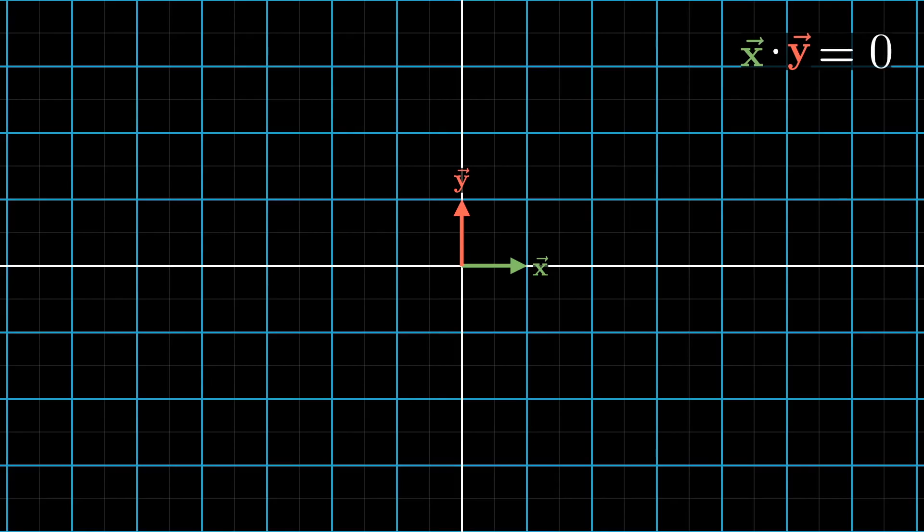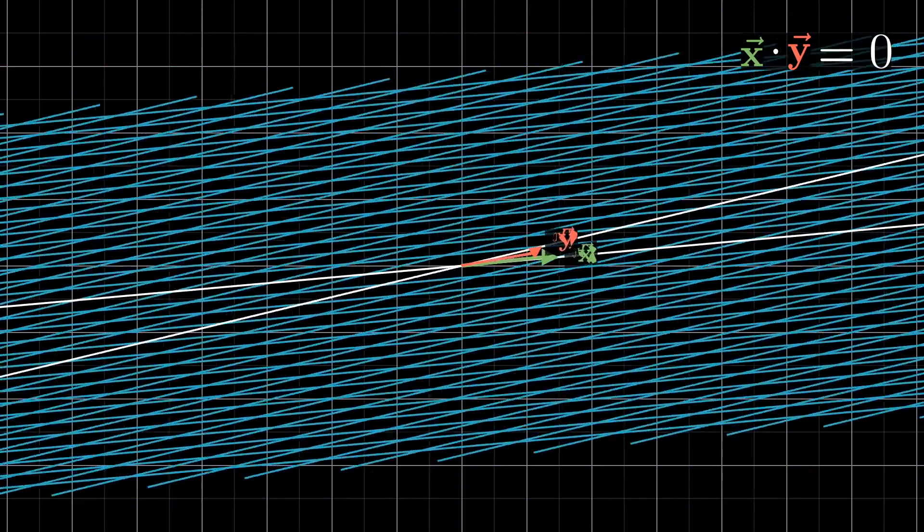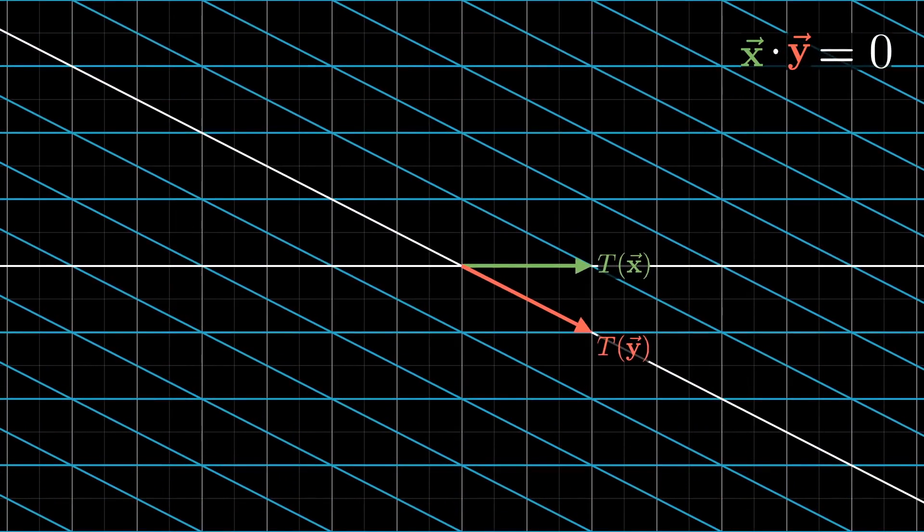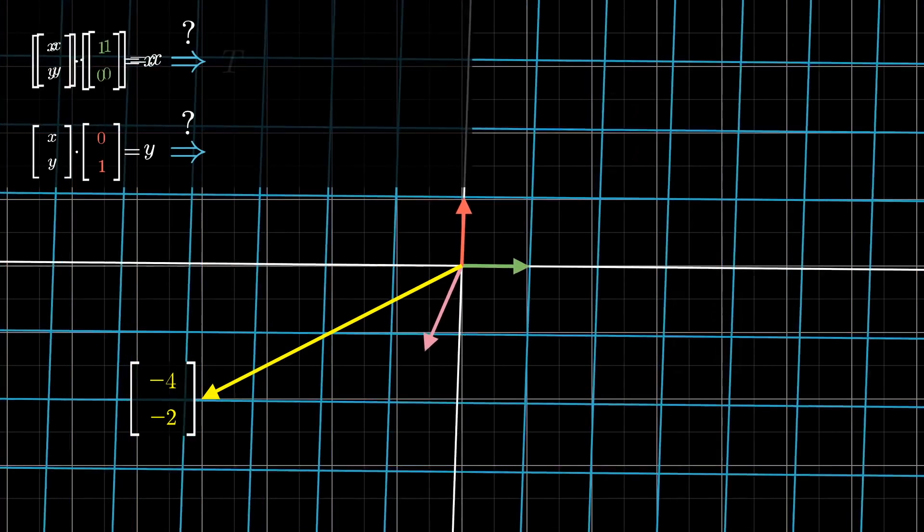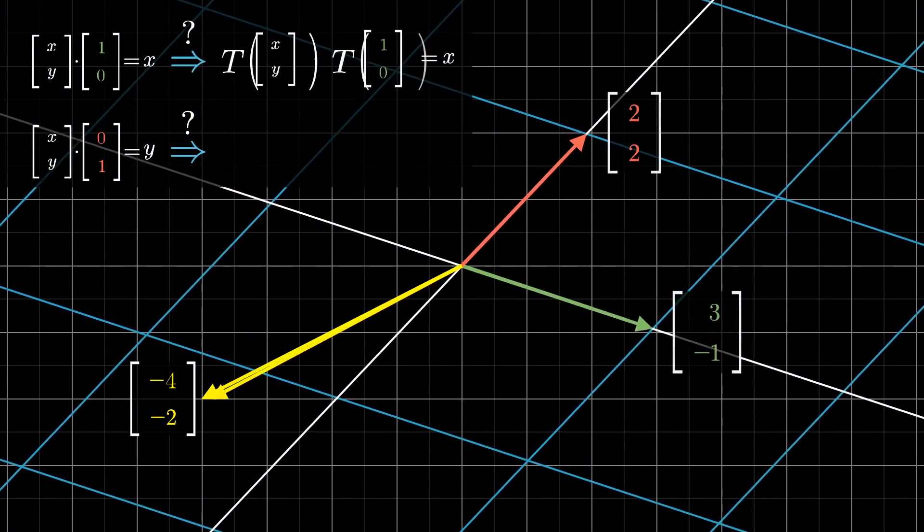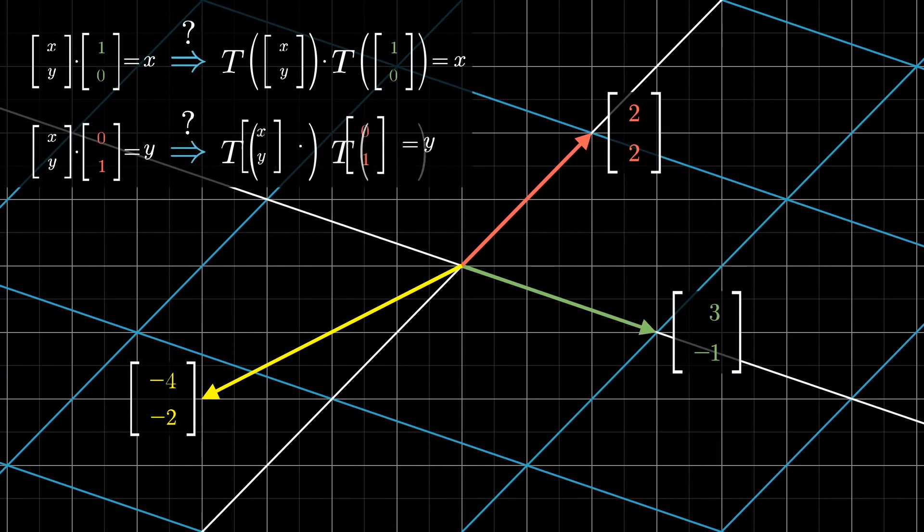For example, you could have two vectors generally pointing in the same direction with a positive dot product, which get pulled apart from each other during the transformation in such a way that they end up having a negative dot product. Likewise, things that start off perpendicular with dot product zero, like the two basis vectors, quite often don't stay perpendicular to each other after the transformation. That is, they don't preserve that zero dot product. And looking at the example I just showed, dot products certainly aren't preserved. They tend to get bigger, since most vectors are getting stretched out.